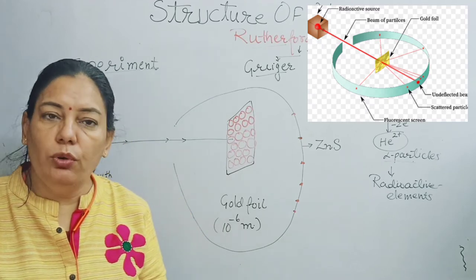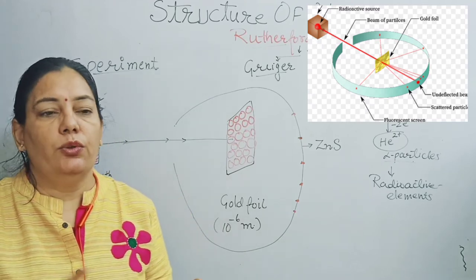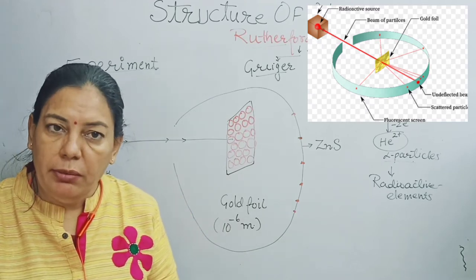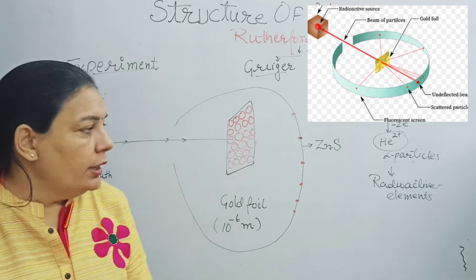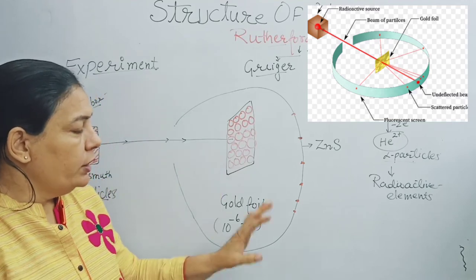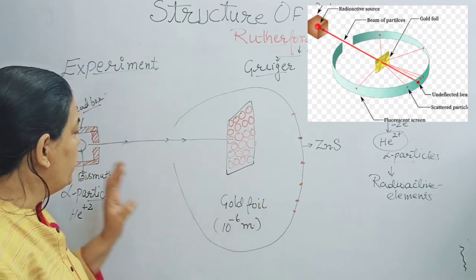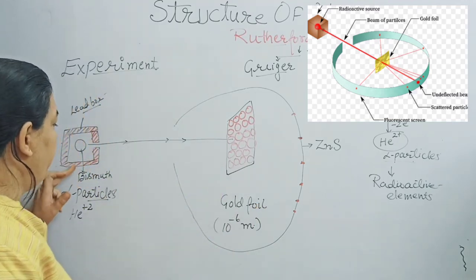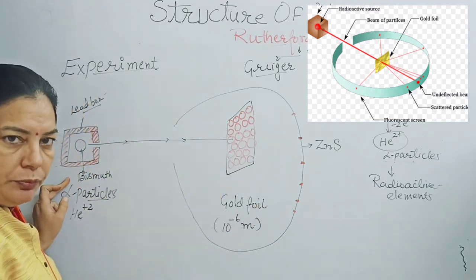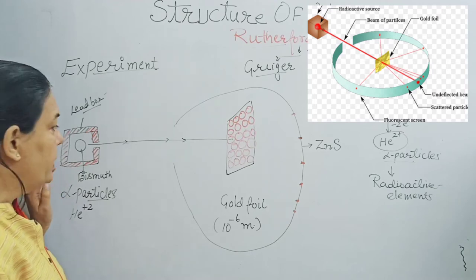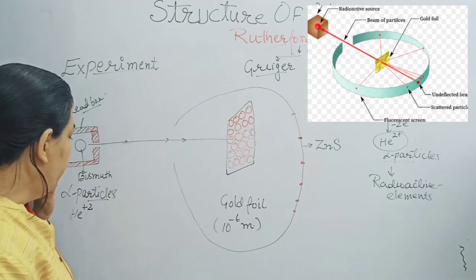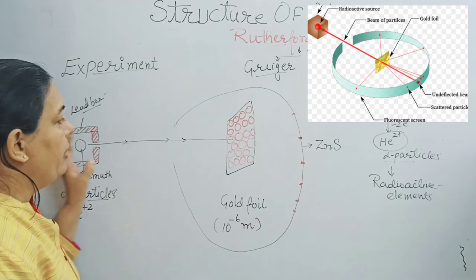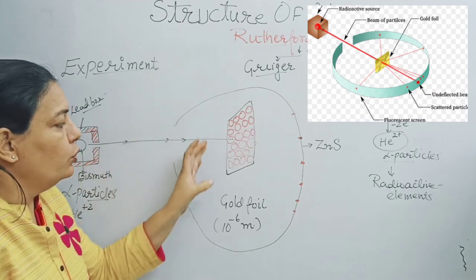This experiment is called the Gold Foil Experiment or the Rutherford Experiment. In this experiment, he took alpha particles and bombarded them on a gold foil. Why gold foil? Because gold is the most malleable metal and can be made into very thin sheets.